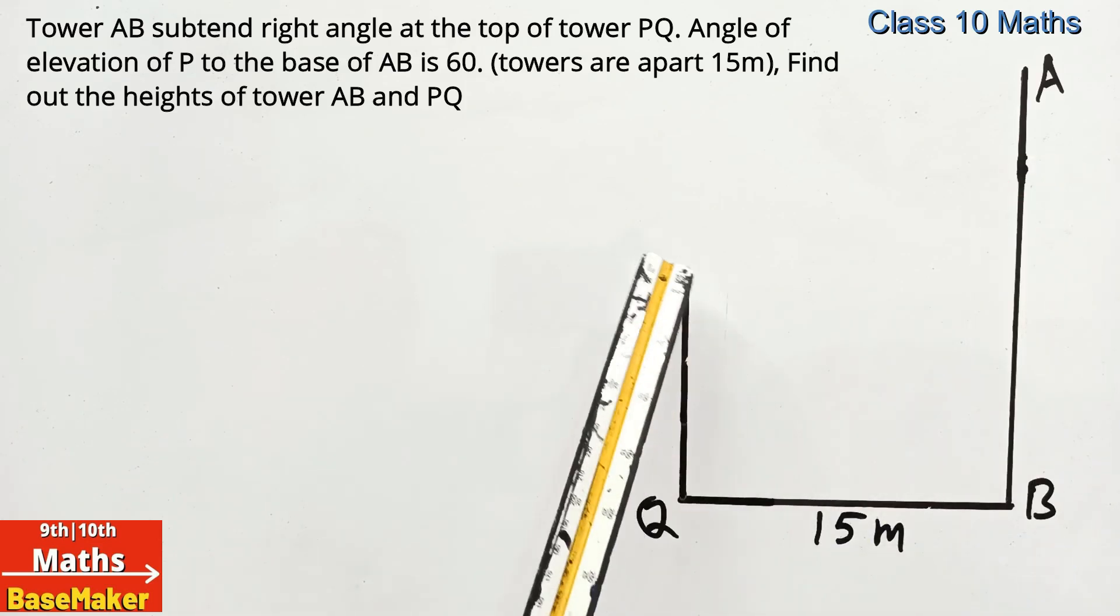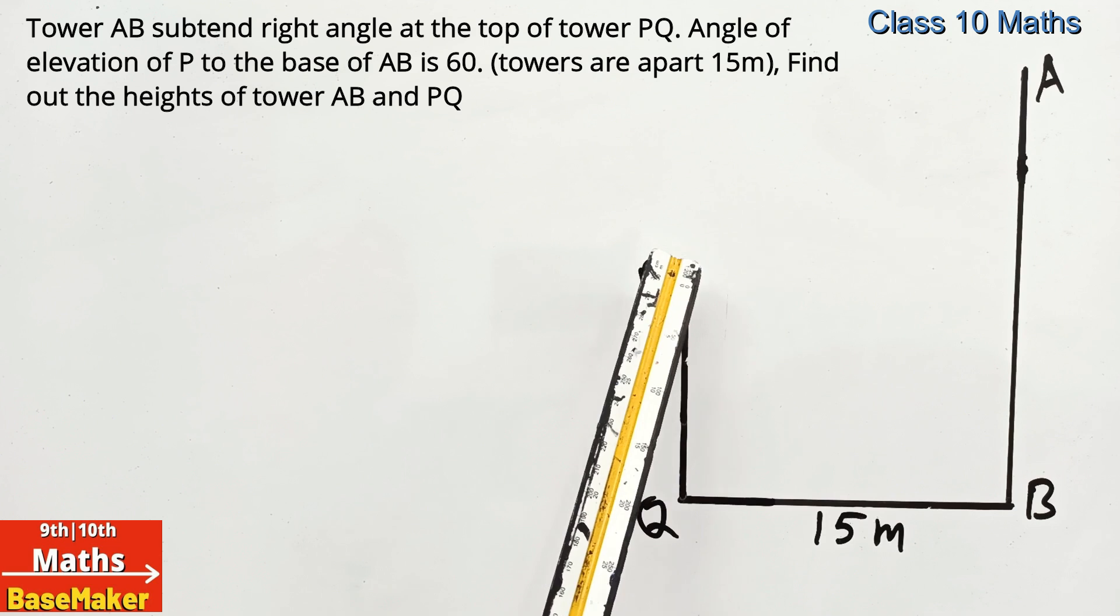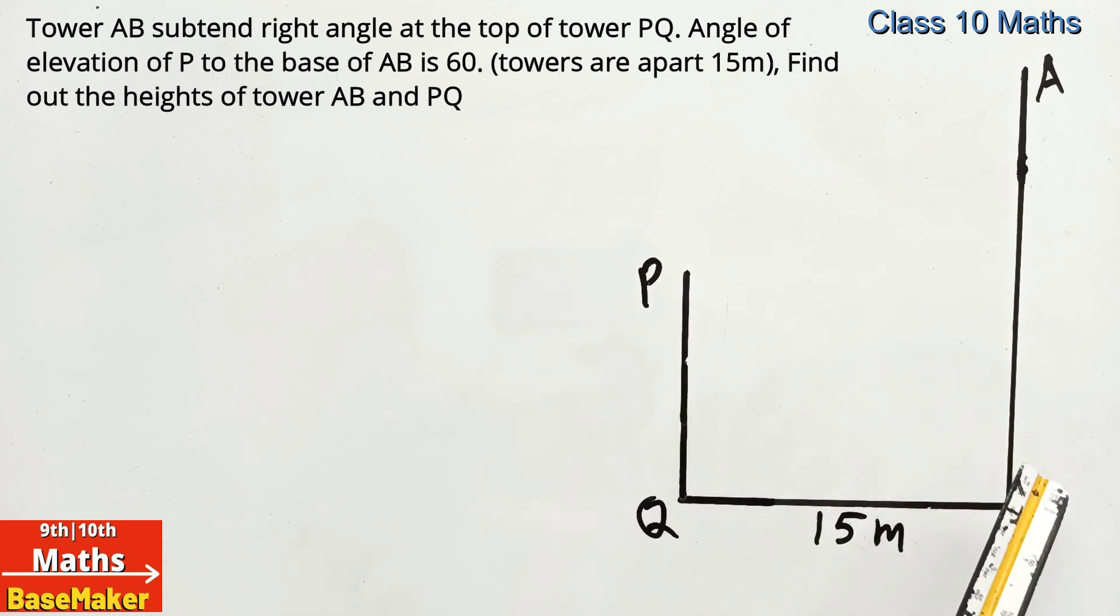Tower AB subtends the right angle at the top of tower PQ. If the angle of elevation of the top of tower PQ to the base of tower AB is 60 degrees, then find out the height of tower AB and height of tower PQ.